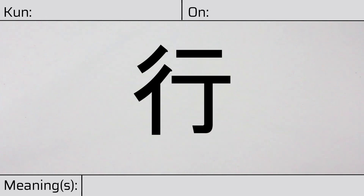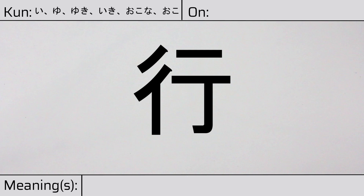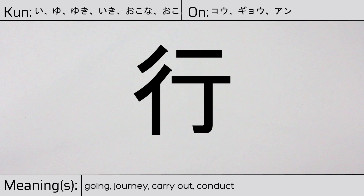Welcome to this lesson on Japanese kanji. Today, we'll be discussing this character. This kanji has kunyomi or Japanese readings of i, yu, yuki, iki, okona, or oko, and it has onyomi or Chinese readings of kou, gyou, or an. This character has the meanings going, journey, carry out, conduct, act, line, row, bank, or go.